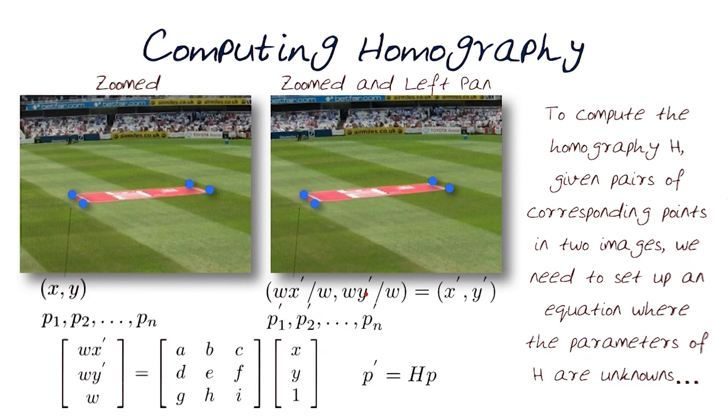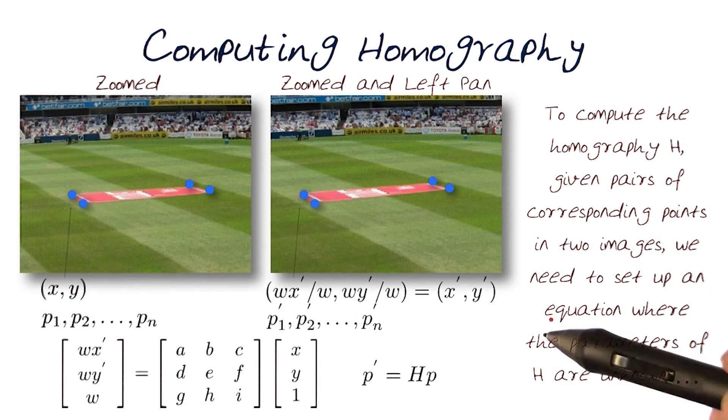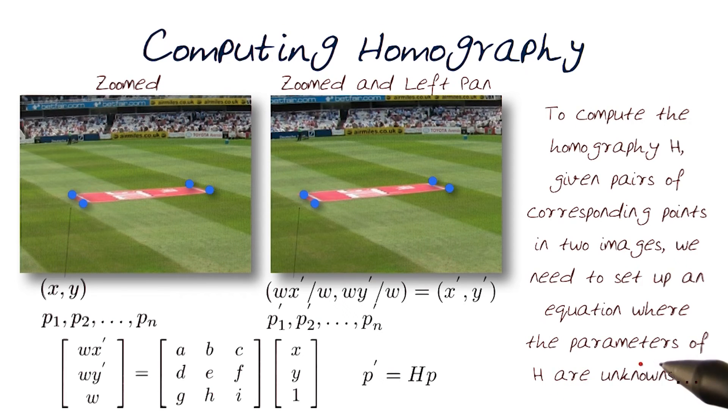So, to compute the homography H, given pairs of corresponding points in the two images, we need to set up a set of equations where the parameters of H are unknown.